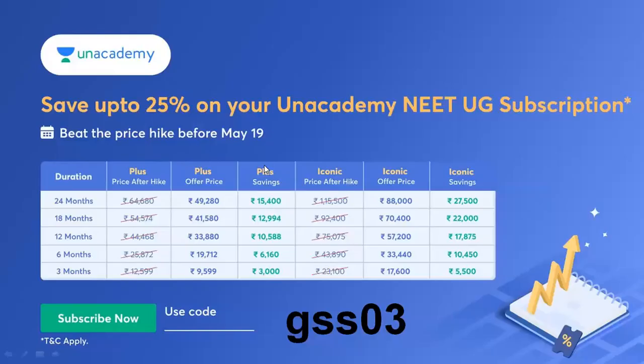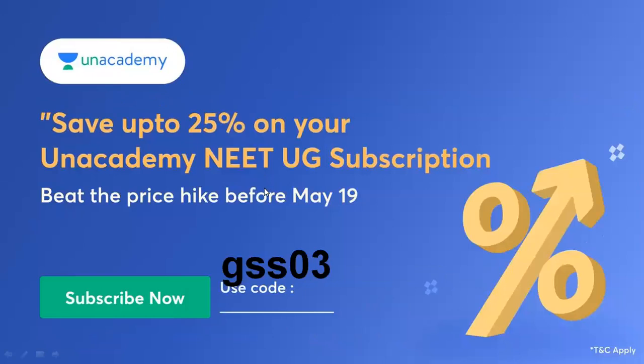If you have a long-term batch, your referral code is GSS03. You can save with my referral code. Don't forget to subscribe to Unacademy with my referral code. There are batches - physics, chemistry, botany, zoology. You need 25% before May 19th subscription to get the discount.